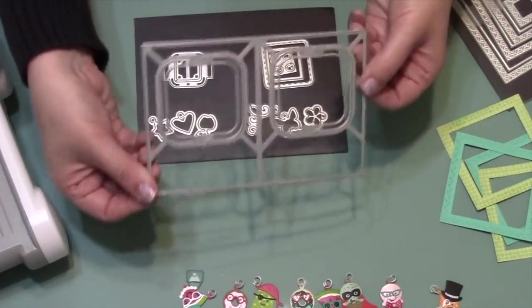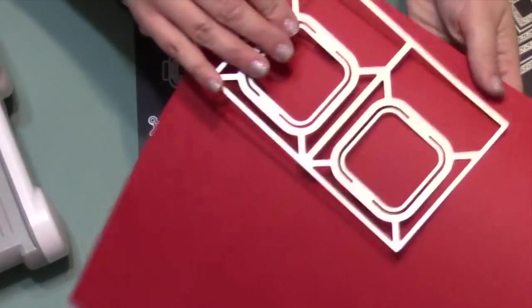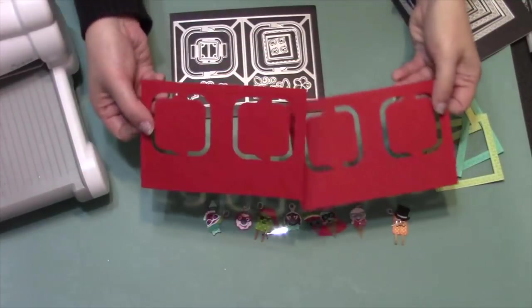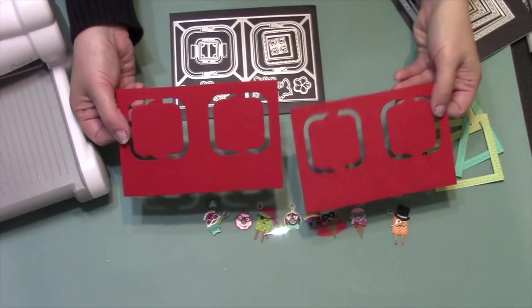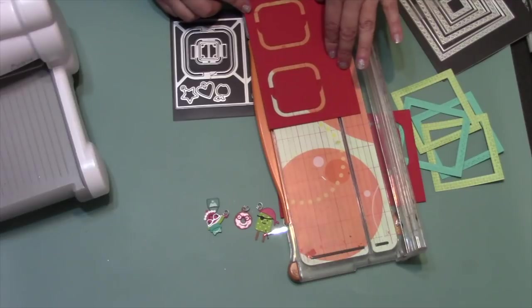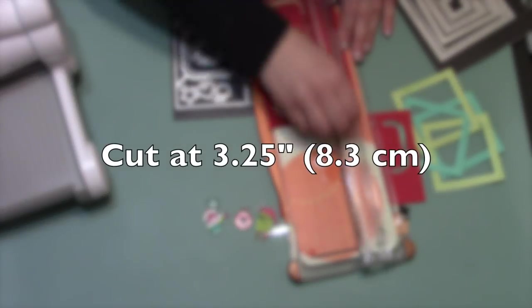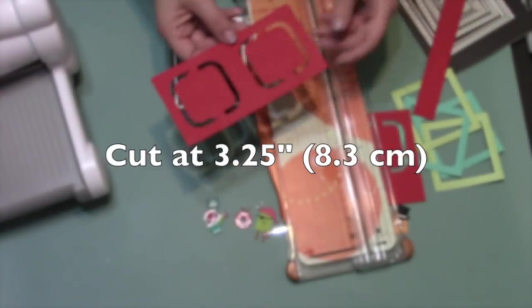Those happen to fit the Charm Accordion just perfectly. Then on the Charm Accordion set, I'll use the big page die itself to cut twice out of red cardstock. Now my alteration is going to be to turn the pages themselves from rectangles into squares, so I want to put the top edge of the accordion at 3 1/4 on my trimmer.